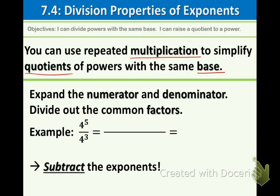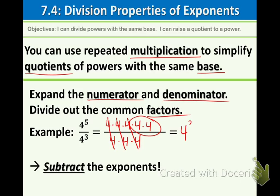We're going to expand the numerator and the denominator, and we're also going to divide out the common factors. Here's an example for us to look at. 4 to the 5th means that we are multiplying 4 times itself 5 times. And 4 to the 3rd means we have 3 of them. Of course,